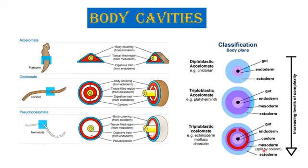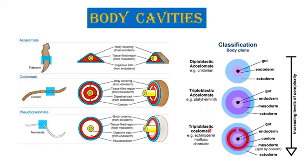Examples of coelomate animals include annelids. In certain animals, pseudocoelomates are seen — the body cavity is not completely lined by the mesodermal germinal layer. Such organisms are called pseudocoelomates, as seen in nematodes or roundworms. The digestive tract cavity is visible, and on both sides it is lined by the mesodermal germinal layers. The body plan, whether diploblastic or triploblastic, and the cavities — acoelomate, pseudocoelomate, or coelomate — show increasing levels of complexity in animals.